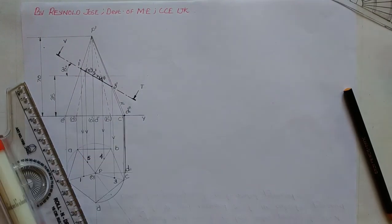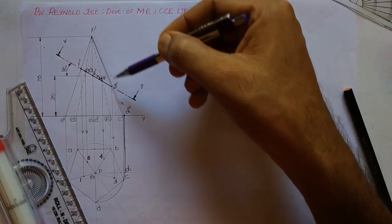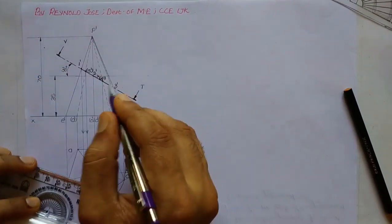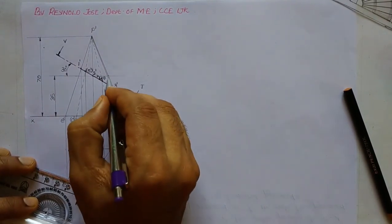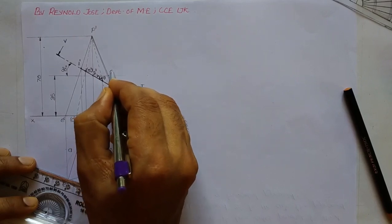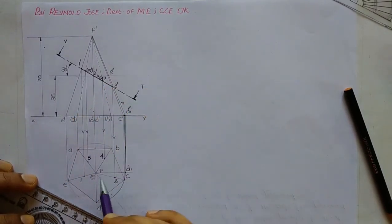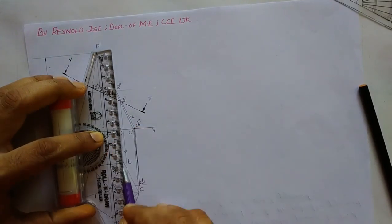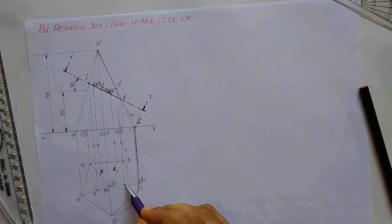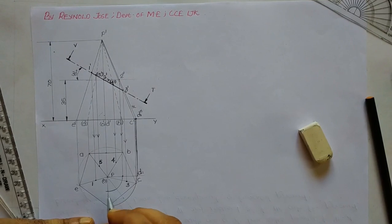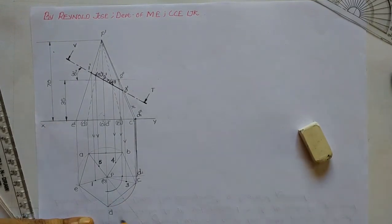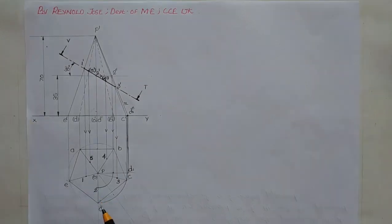We mark P'-D1'' as true length. We transfer 2' up to P'-D1'', marking the meeting point as 2''. Then we transfer 2'' back to P-D1 and rotate this point 90 degrees up to P-D, giving us point 2 on the top view. We then join points 1, 2, 3, 4, 5, 5, 1 using thick lines.